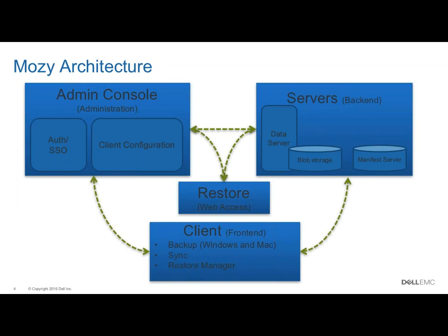Here's a generalized overview of our architecture. There are four parts. The first one on the left is the admin console — that's our administration aspect. When we talk about the admin console, we're talking about authentication and secure sign-in, but also where we look after client configurations. For Mosey Pro users, if you set up a client configuration to push out to all your users, this is the area of our architecture where that configuration is stored. The admin console is also where we do authentication for all accounts — even when running a backup, this is where your backup goes to authenticate.